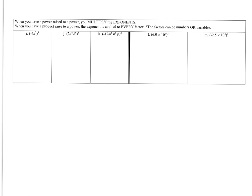Stop the video and try the next one. Letter I: everything to the 3rd power. Negative 4 to the 3rd power gives negative 64; multiply the exponents on x to get x to the 6th. For the next, taking everything to the 5th power: 2 to the 5th power is 32, multiply exponents to get a to the 20th, b to the 30th. Bringing everything to the 2nd power: negative 12 to the 2nd is 144; multiply exponents for m to the 10th, n to the 16th, p to the 2nd.